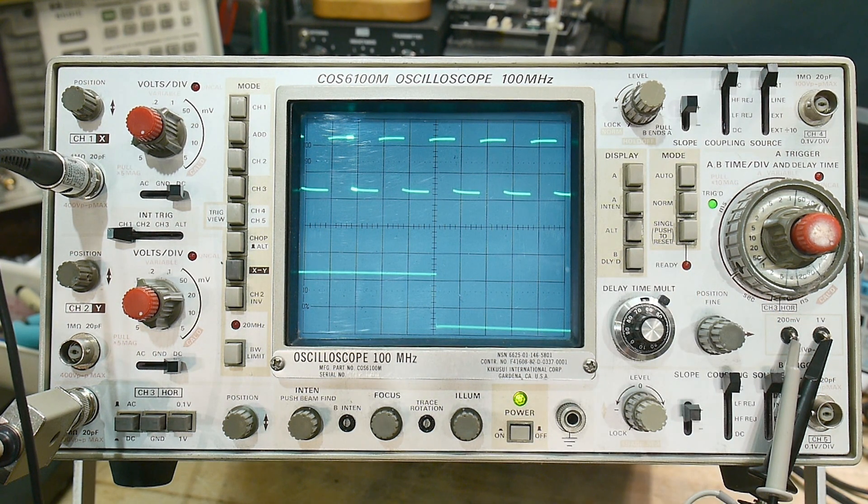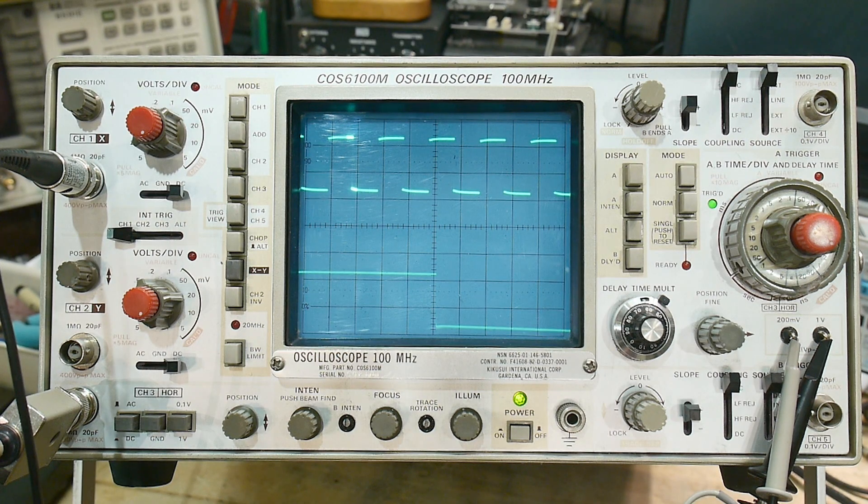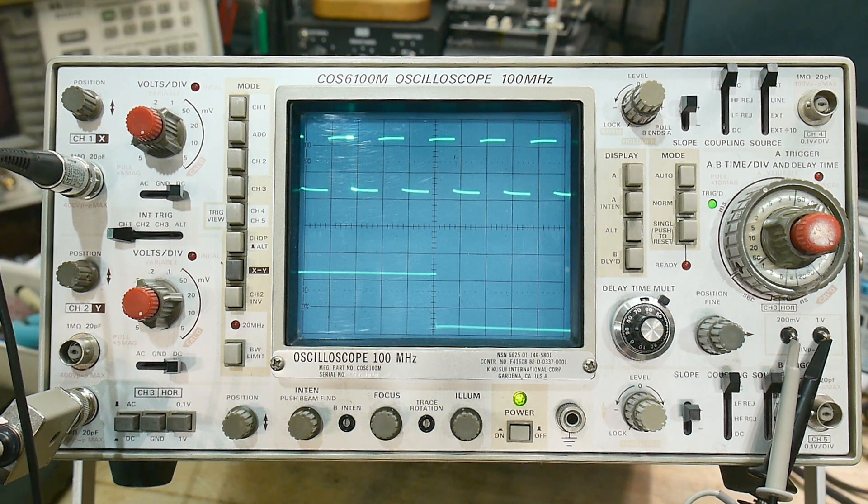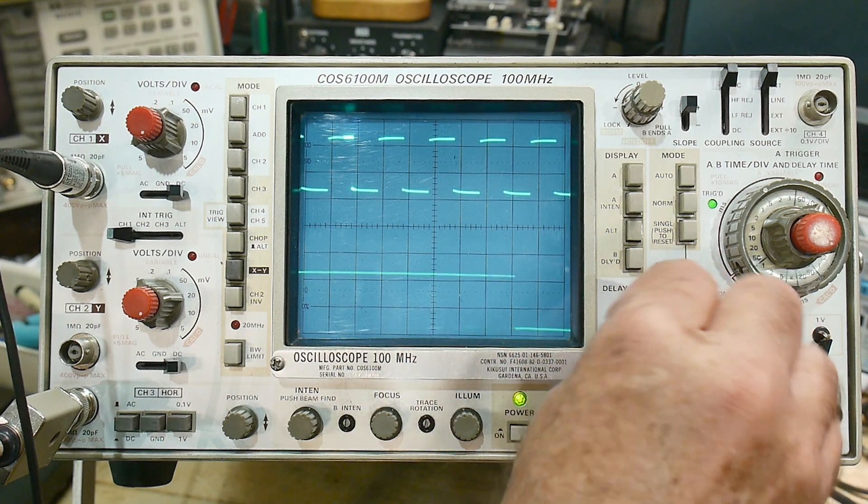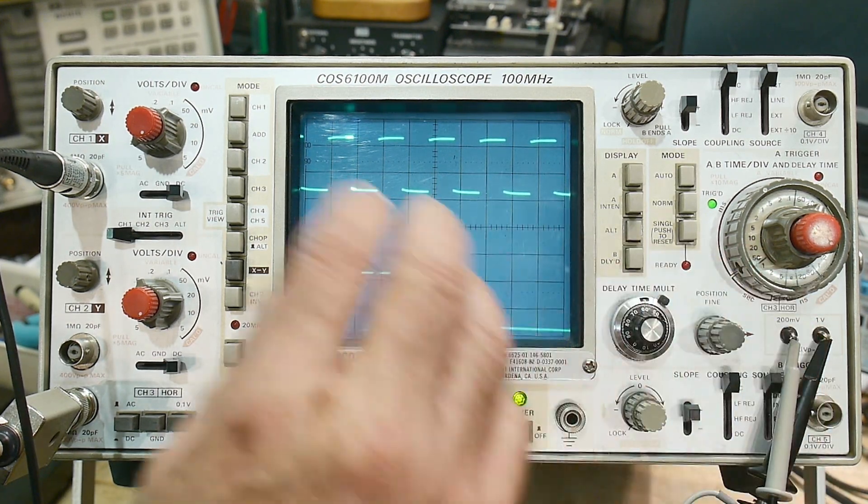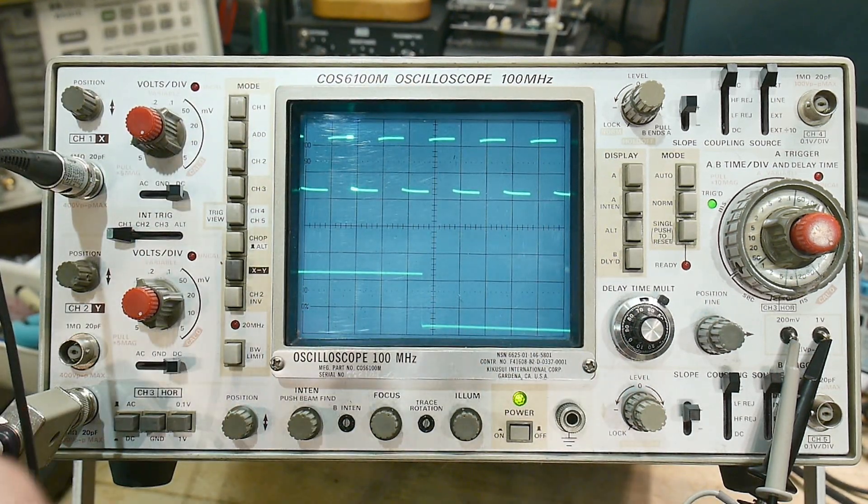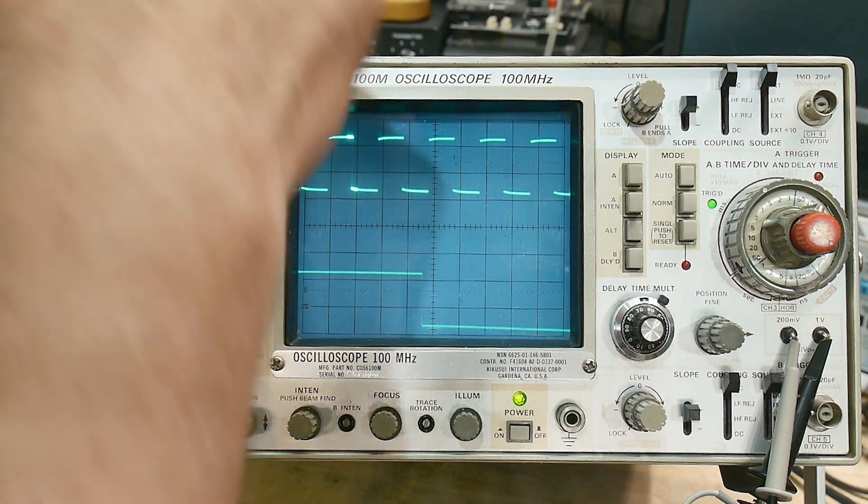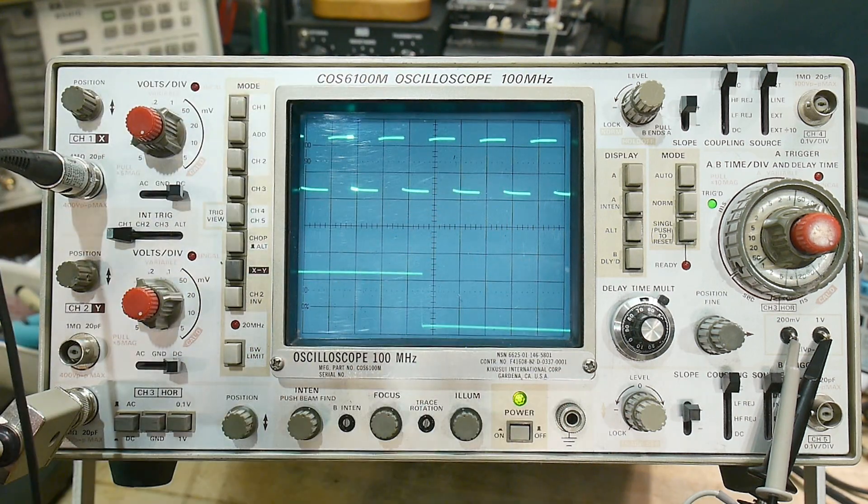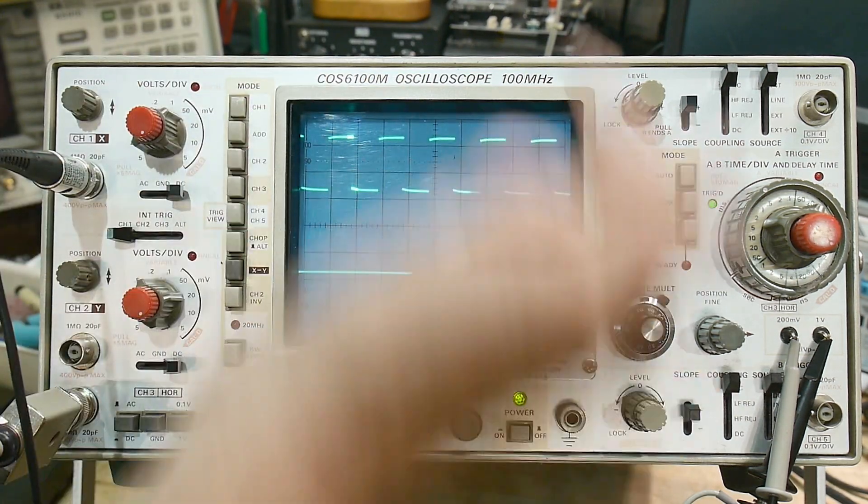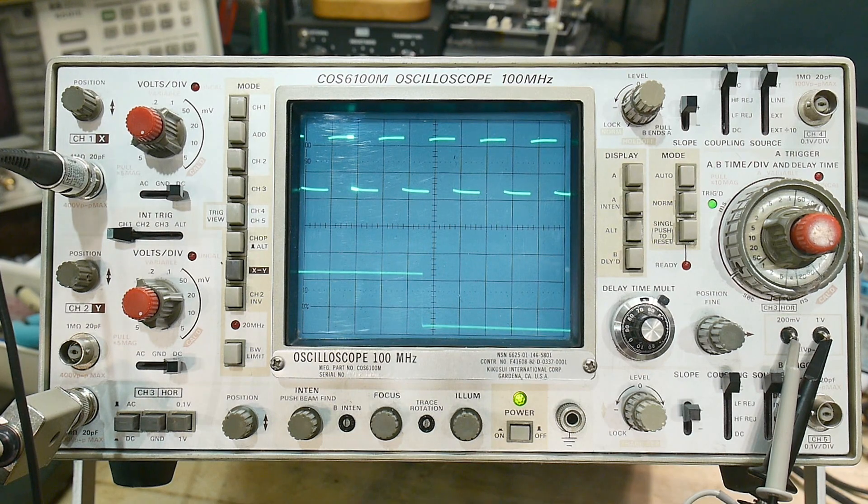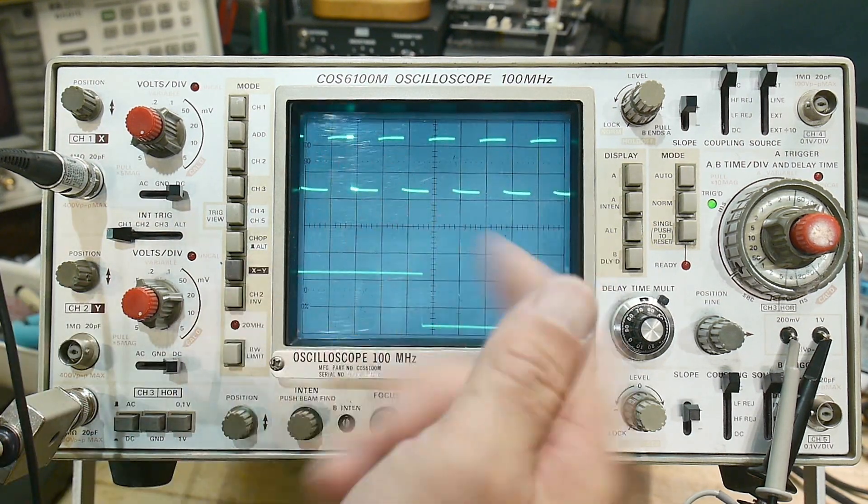Some people were confused when I showed a delay line in the oscilloscope that they thought the delay line was delayed sweep. No, it's not. Delayed sweep is exactly this. This scope does not have a delay line in it. I cannot look at a trigger event in this scope. I'm not able to see before the trigger in this oscilloscope.